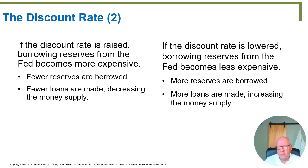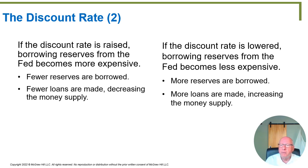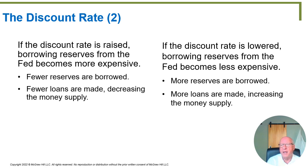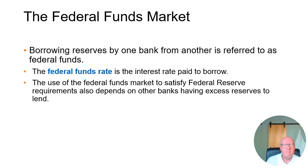Vice versa — if the Federal Reserve lowers the discount rate, say from five percent to two percent, banks see money as cheap at the Federal Reserve and go borrow it. They bring it back to their bank as excess reserves, then lend it out at a higher rate and make money on the deal. When the Federal Reserve lowers the discount rate, banks have an incentive to borrow, turn around and make loans, and through the money multiplier process there will be an increase in the money supply.